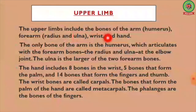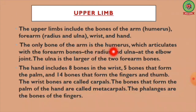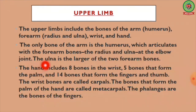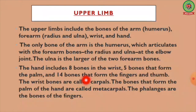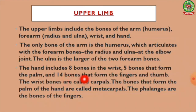The upper limbs include the bones of the arm (humerus), forearm (radius and ulna), wrist, and hand. The only bone of the arm is the humerus, which articulates with the forearm bones — the radius and ulna — at the elbow joint. The ulna is the larger of the two forearm bones. The hand includes eight bones in the wrist, five bones forming the palm, and fourteen bones forming the fingers and thumb.